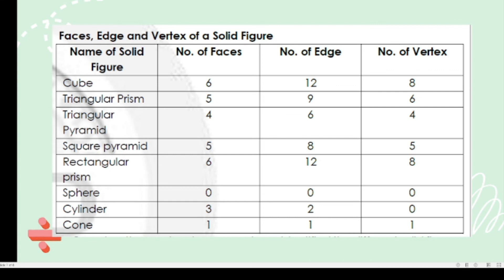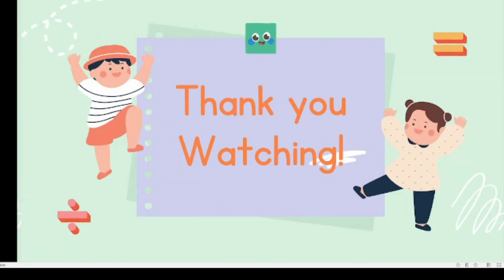Sphere has no faces, no edges, and no vertices. Cylinder has 3 faces, 2 edges, and 0 vertices. Cone has 1 face, 1 edge, and 1 vertex. And that's all, thank you for watching.